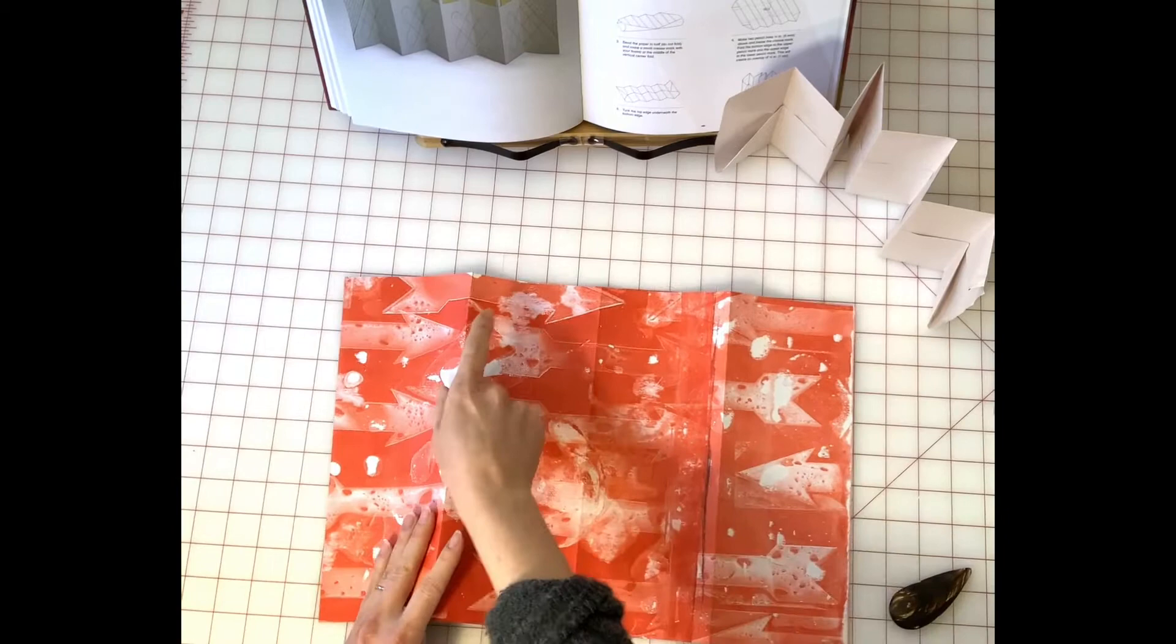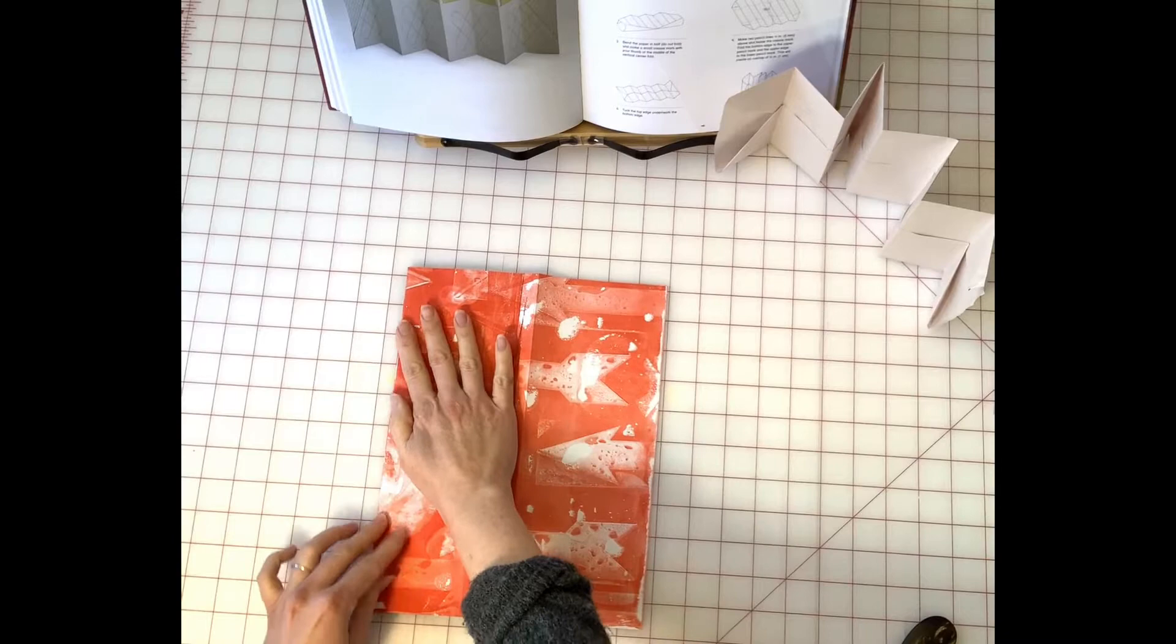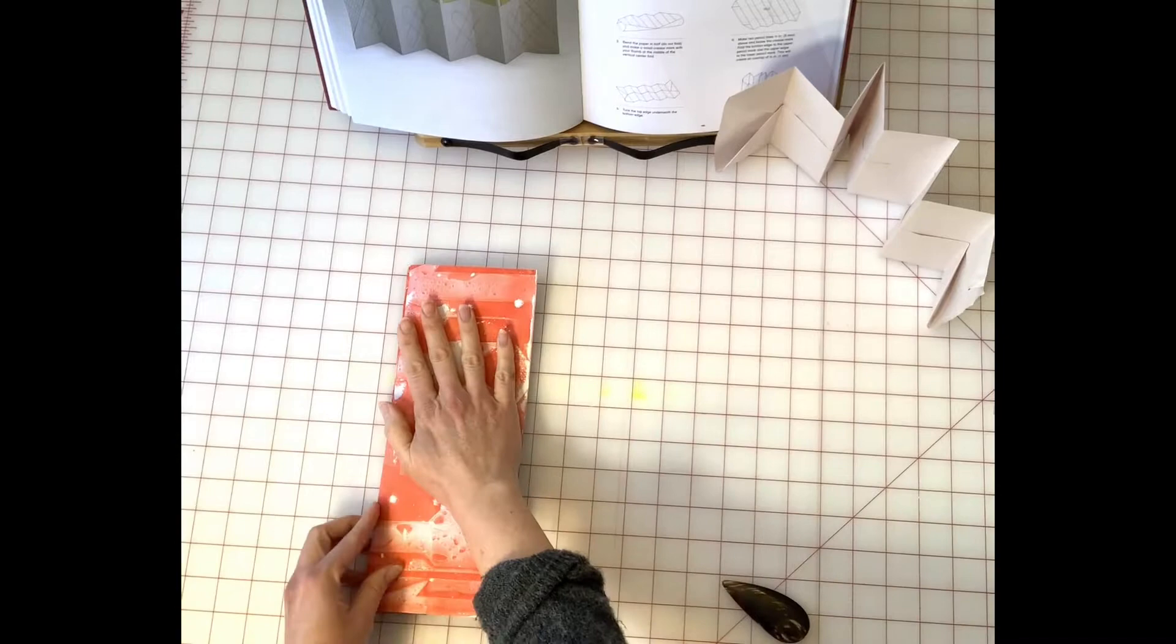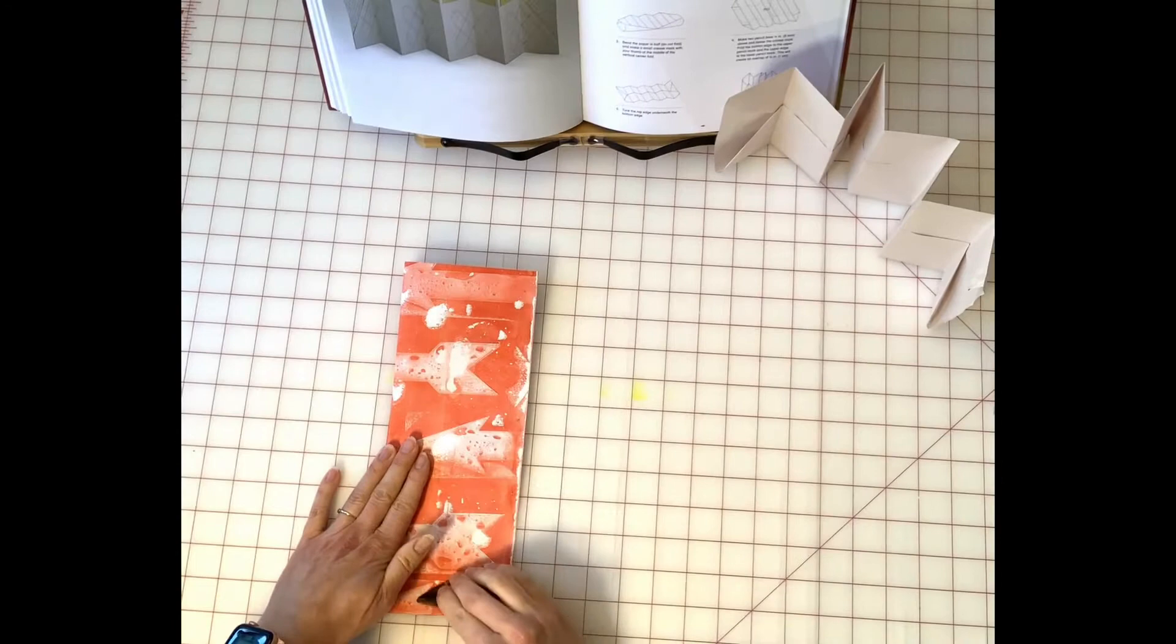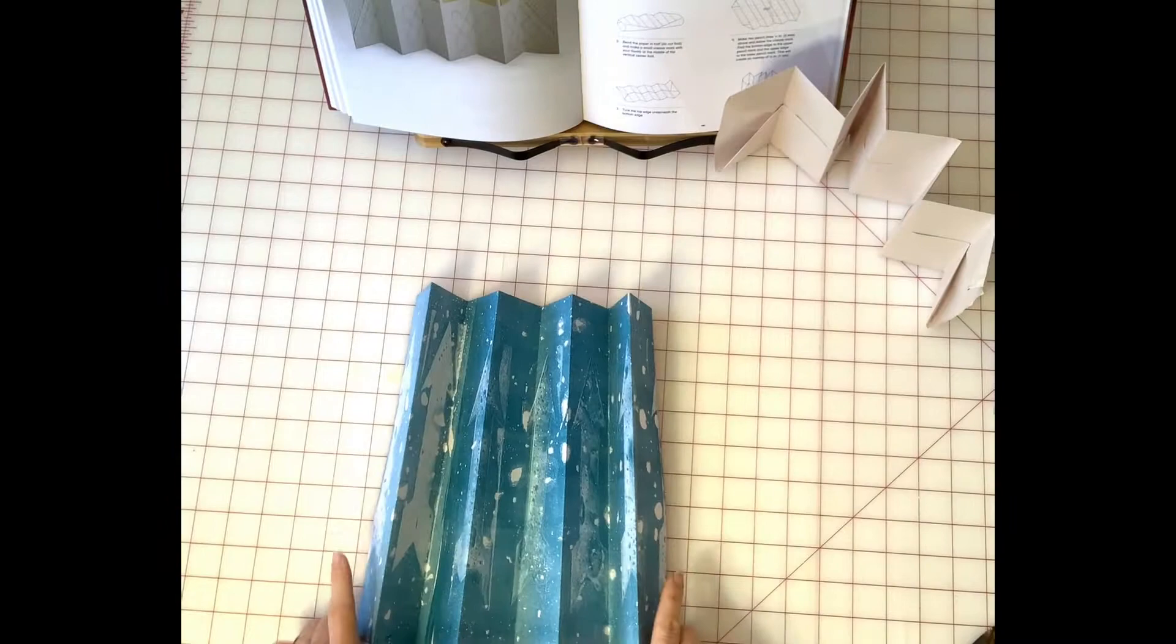Once you get your first mountain folds then you pull a mountain fold over to the edge and you double the folds in that section. You want to use your bone folder to make nice solid creases. Also this accordion is best when you use text weight or very light coverweight paper.